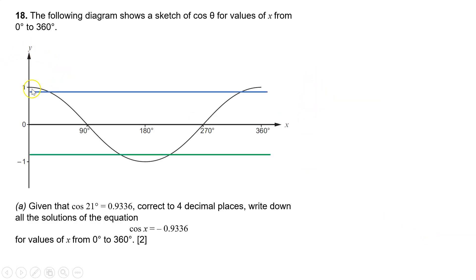So there's our line for 0.9336, and there's our line for minus 0.9336. The blue is the one that we were given, and the green is the one that we need to find. So we are told that our angle here is 21 degrees. So the cos of 21, that's where the blue line crosses the cos line, gives us 21, is 0.9336.